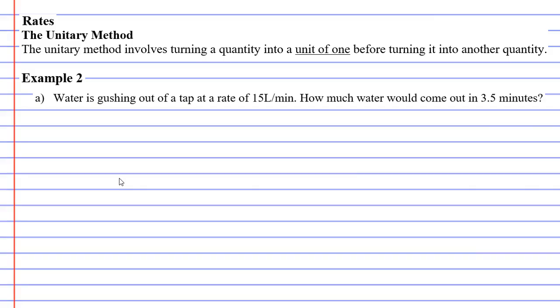We'll start with question A: Water is gushing out of a tap at a rate of 15 litres per minute. How much water would come out in 3.5 minutes? We're going to use the four boxes technique and write our 15 litres per minute, splitting it into two boxes. So we've got our 15 litres and then one minute.